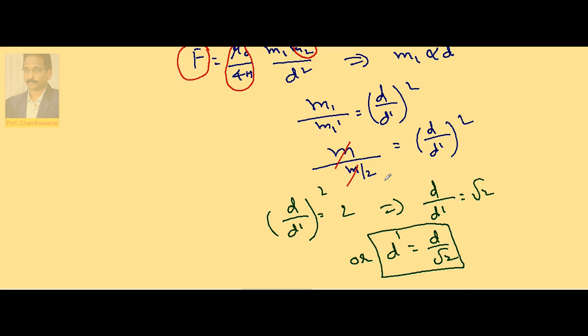So when one pole strength is halved, then the distance must be made 1 by root 2 times the initial value so that force remains same.